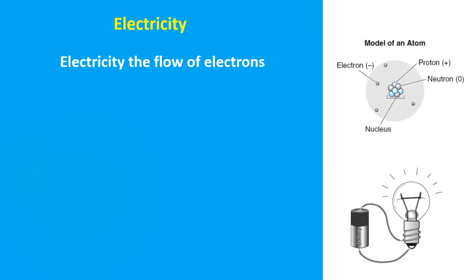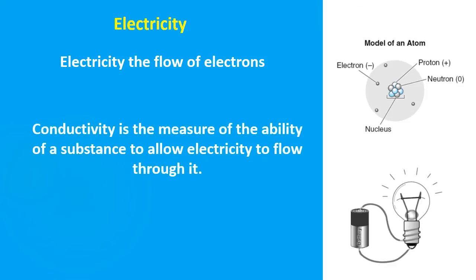Now let's talk about electricity and electrolytes. Electricity is the flow of electrons — those negatively charged particles that make up the atom along with protons and neutrons. Conductivity is a measure of the ability of a substance to allow electricity to flow through it — how well it allows these negatively charged particles to flow. That is what describes the electrical conductivity of a substance.